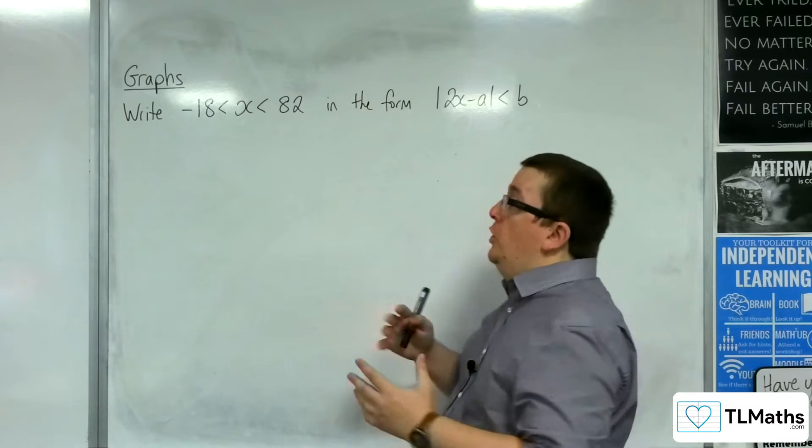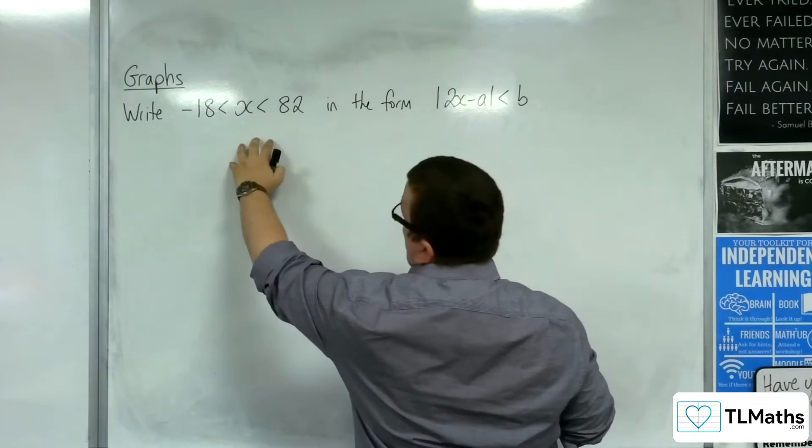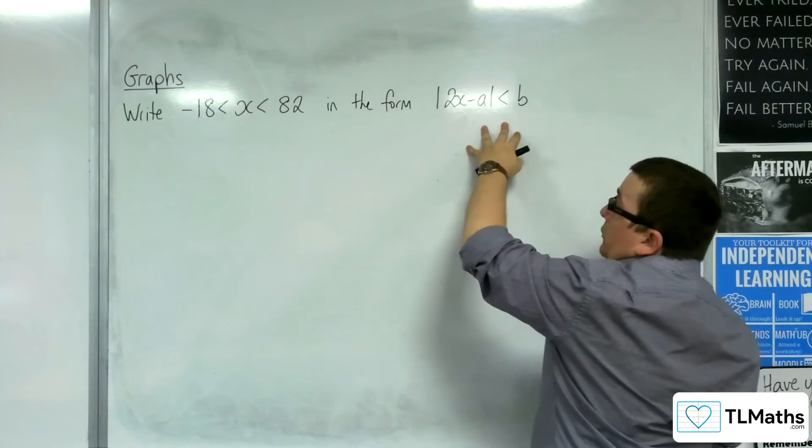In this video, I'm going to show you how we can solve this problem: Write -18 < x < 82 in the form |2x - a| < b.